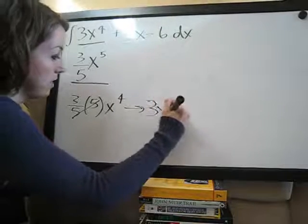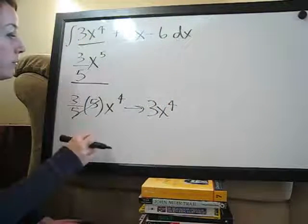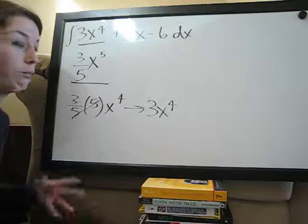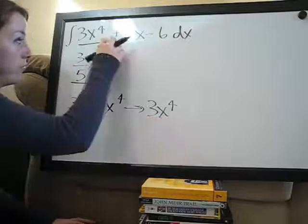and that would give us 3x to the 4th, which is this term up here. So we know that we took the antiderivative or the integral correctly because if we reverse the process, we get the correct derivative up here.